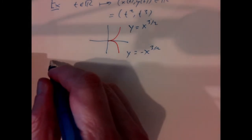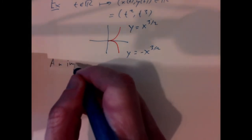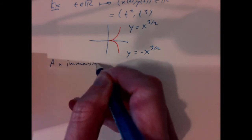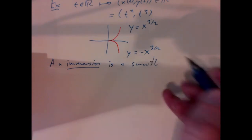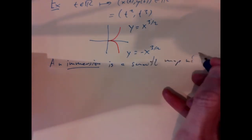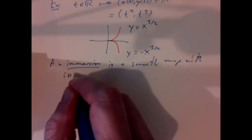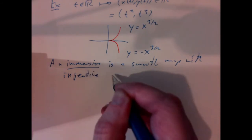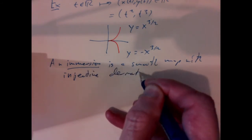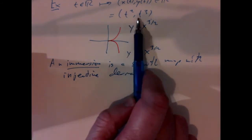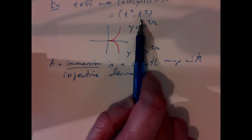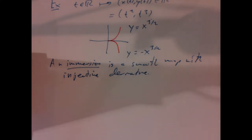The first thing we want to insist on is that kind of condition. An immersion is a smooth map with injective derivative — injective as a linear map. That's not what's happening here, because at t equals 0, the derivative of this map, as a linear map, is just 0, so it's not injective.